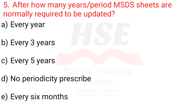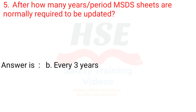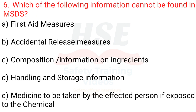Question 5: After how many years period are MSDS sheets normally required to be updated? A. Every year, B. Every three years, C. Every five years, D. No periodicity prescribed, E. Every six months. The answer is B. Every three years.